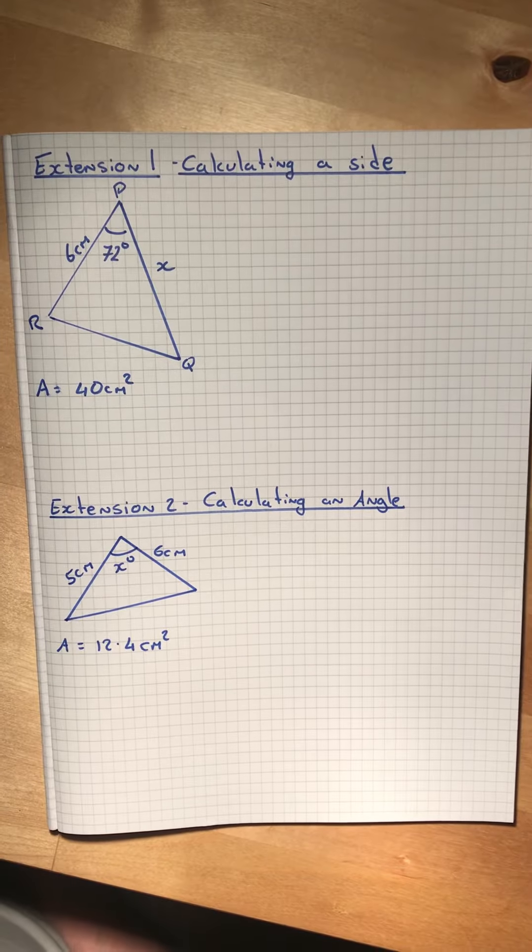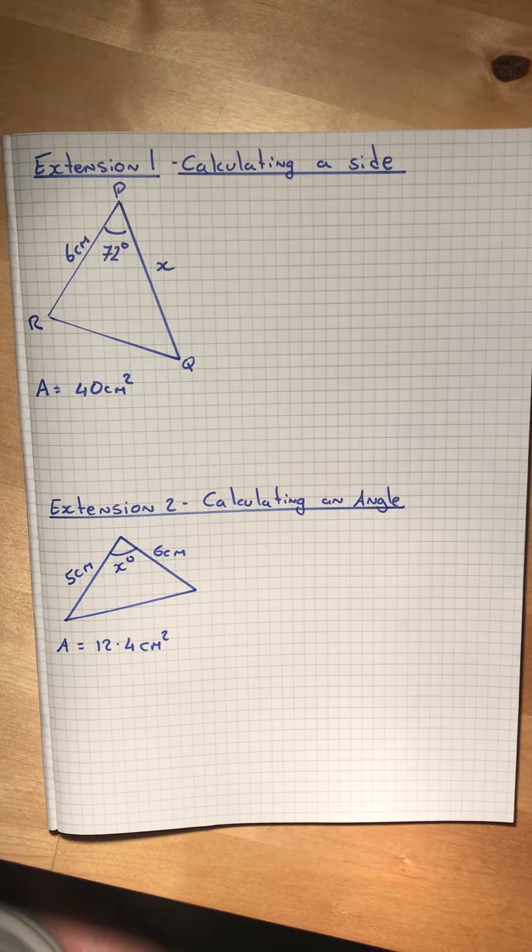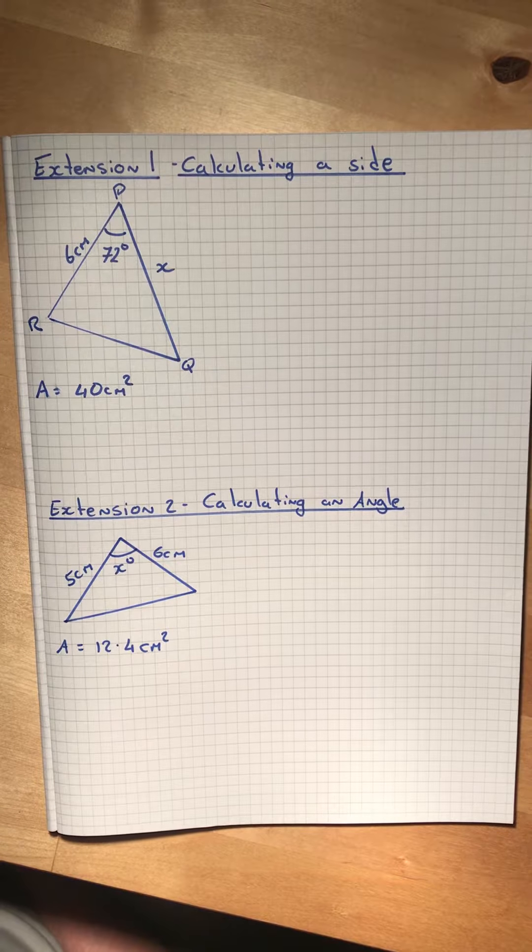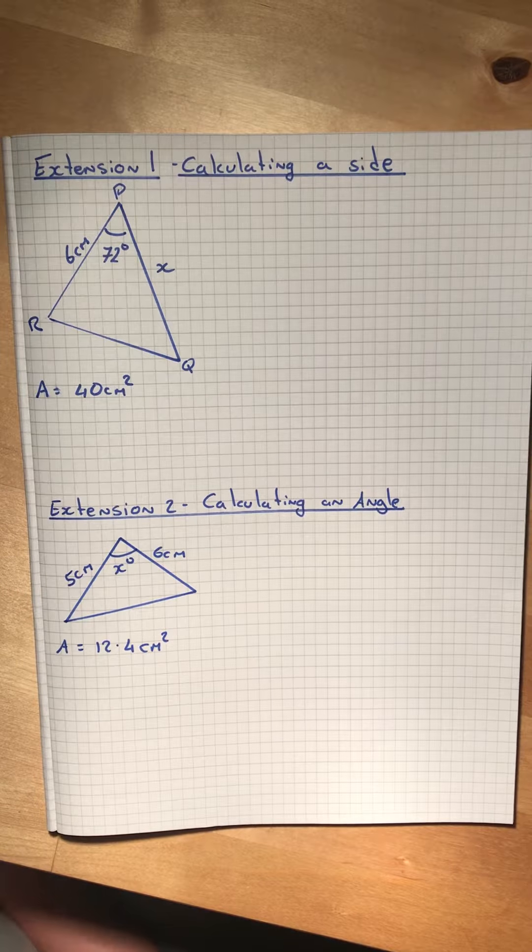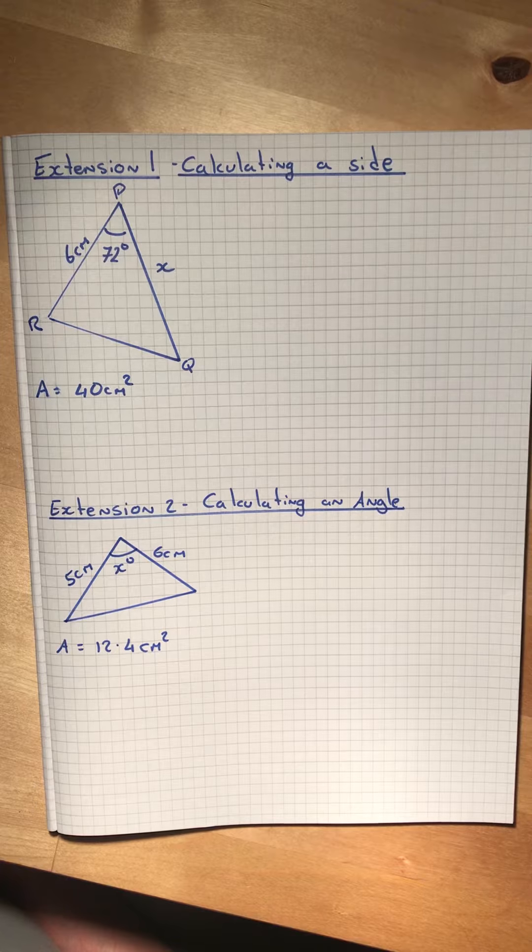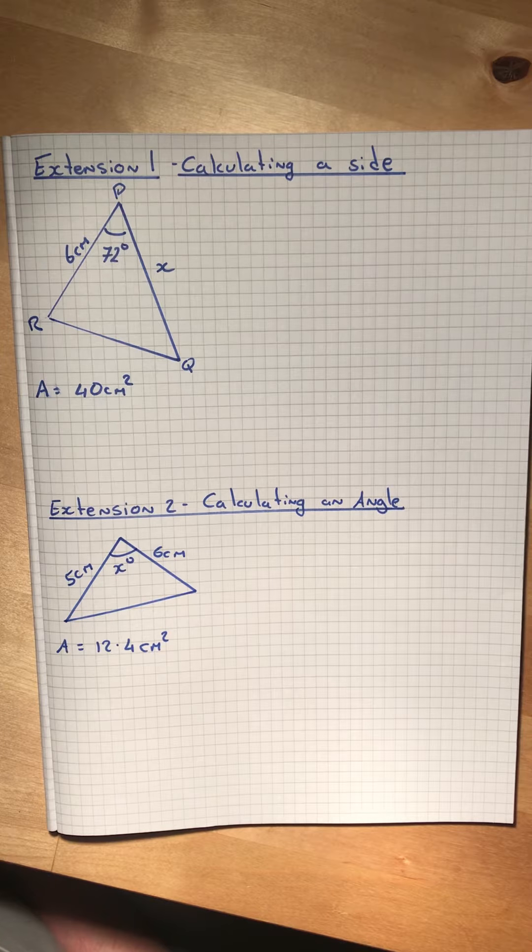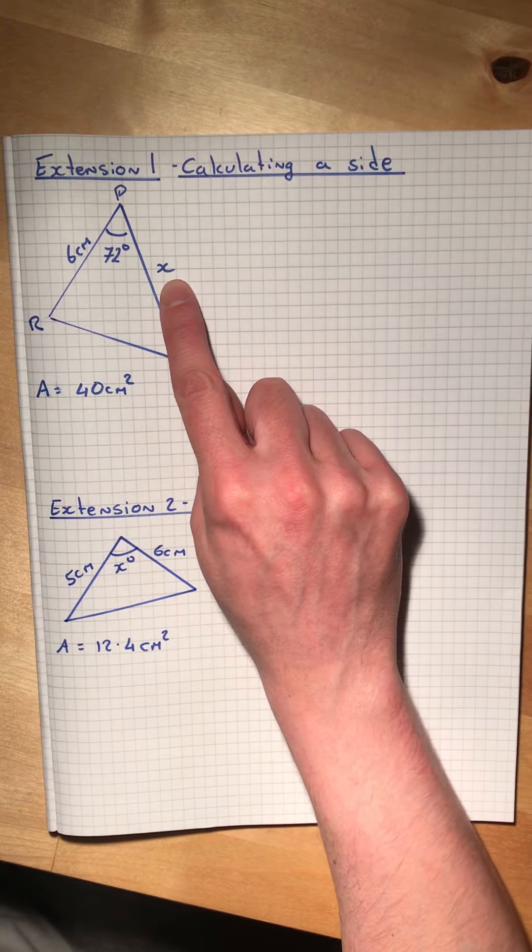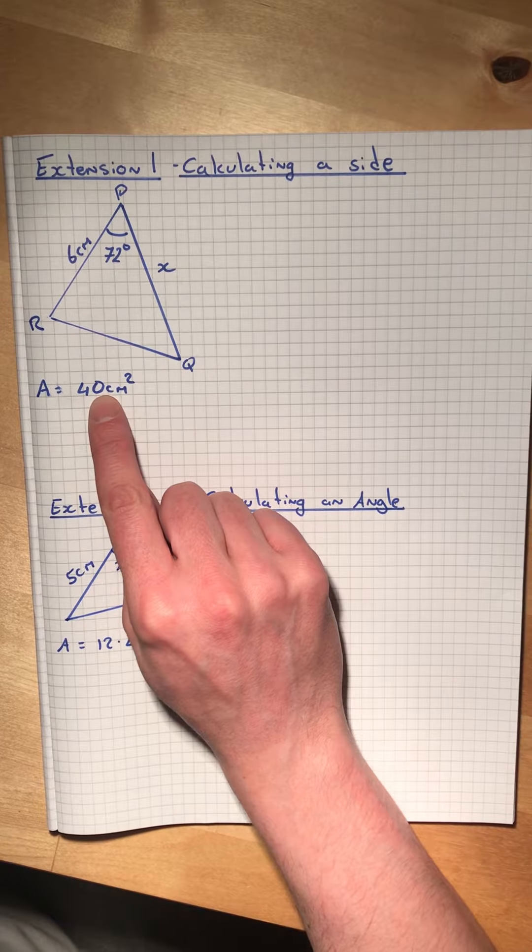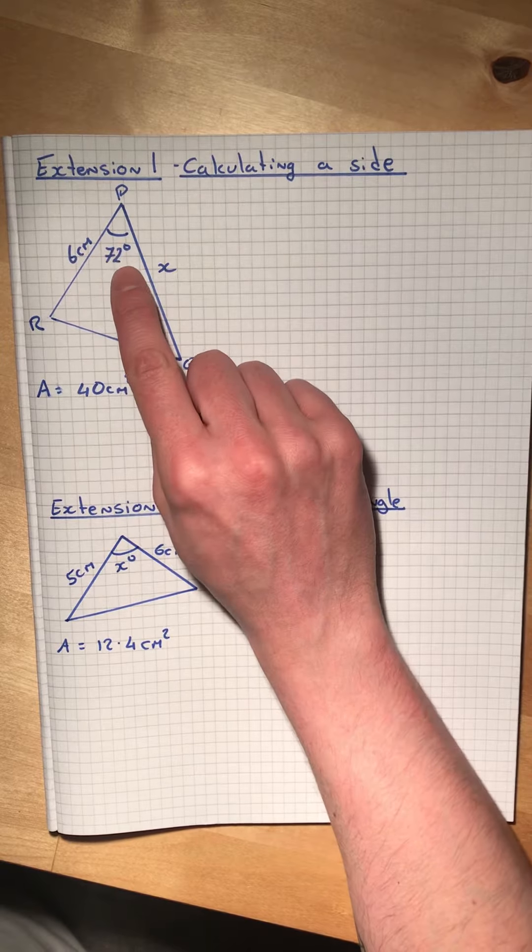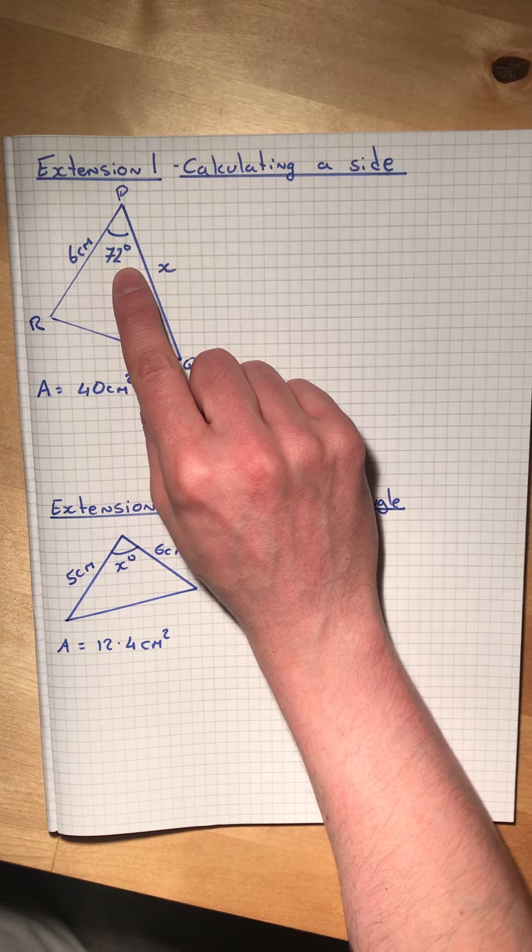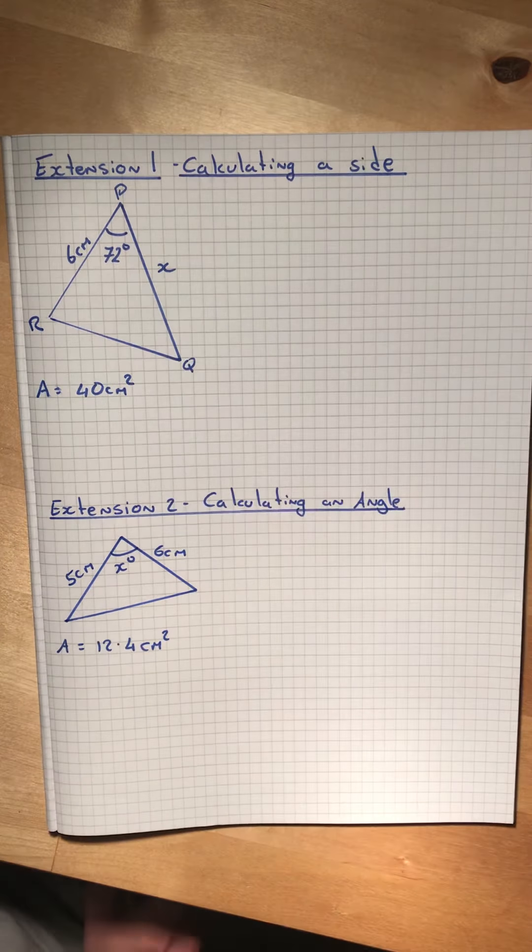Now, what we've just learned is how to calculate the area of a triangle using trigonometry, specifically two sides and the angle between them. One of the questions asks us to calculate the length of a side instead of the area. We've been given the area, one side, and an angle. It's going to use the same formula, we just have to rearrange it slightly.